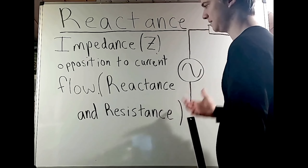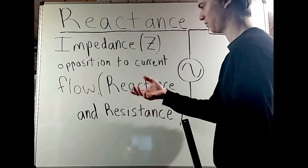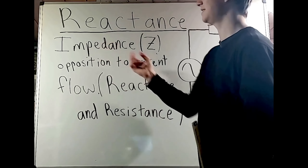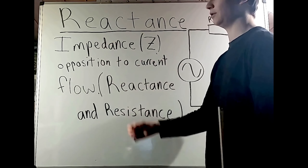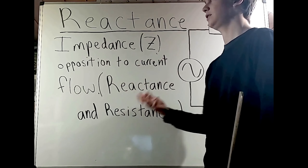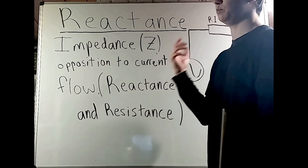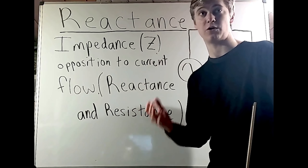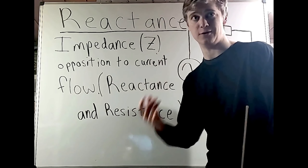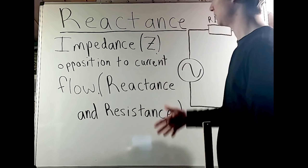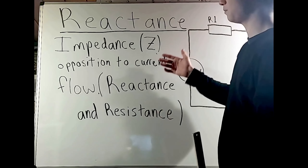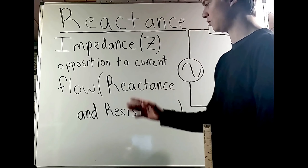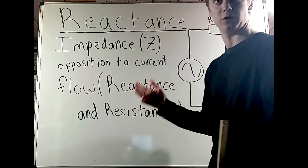An AC circuit with both reactance and resistance would have impedance as the opposition to current flow. In all cases, impedance, reactance, and resistance are all expressed in ohms. We see Z for impedance, X for reactance, and R for resistance.